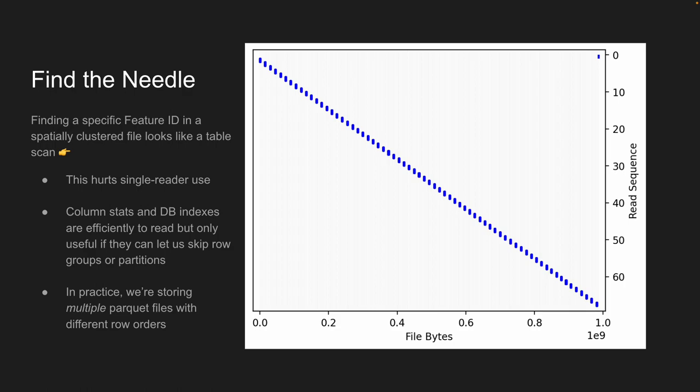Column stats and row order really matter. One use case: when users need to pick a specific item from their file — they upload something, zoom in, and want info about a specific feature. GeoParquet is really kind of single-order — in practice we store multiple Parquet files with different row orders. One version is clustered spatially for bounding box queries, but you need a different ordering to efficiently find a specific feature.